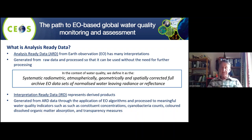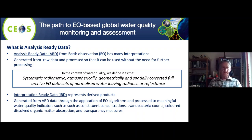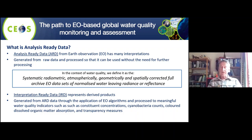Interpretation-ready data represents derived products: you use the analysis-ready data, then apply algorithms to go to water quality, for instance. Some of the water quality constituent concentrations we can derive nowadays include the total amount of algae or cyanobacteria, colored dissolved organic matter, the tannins in the water, transparency, turbidity, and more.